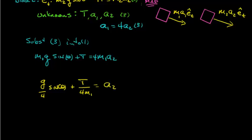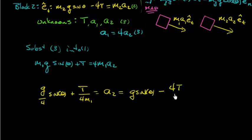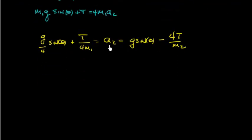Why isolate a2? Because we have the other equation also containing a2, which we can use to eliminate it. We divide equation 2 by m2 and set it equal: m2·g·sinθ / m2 gives g·sinθ, then we subtract 4T/m2. Both expressions equal a2, so we set them equal and bring all the tension terms to the left-hand side.